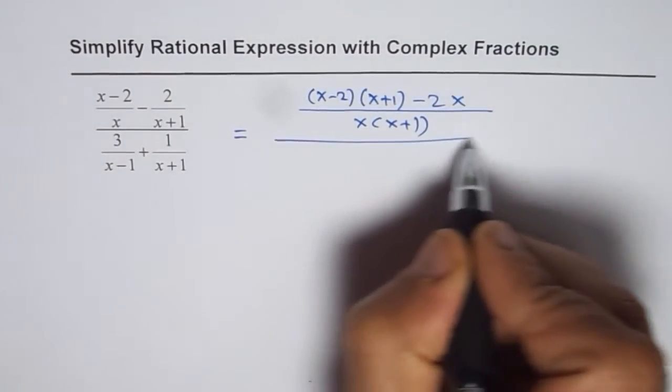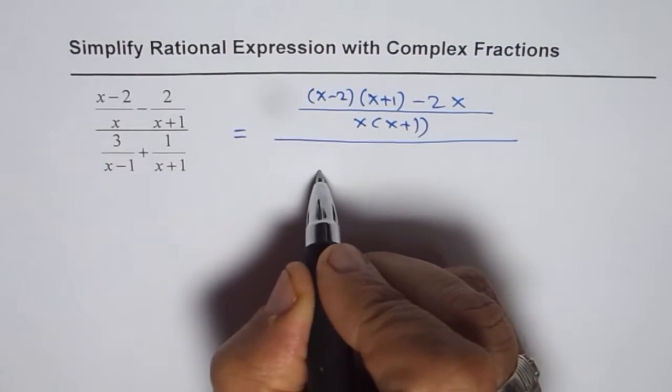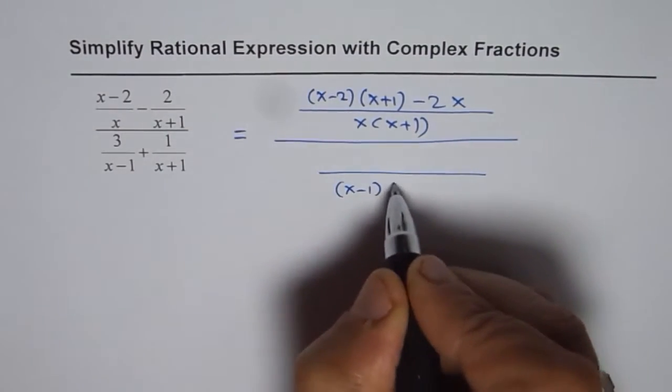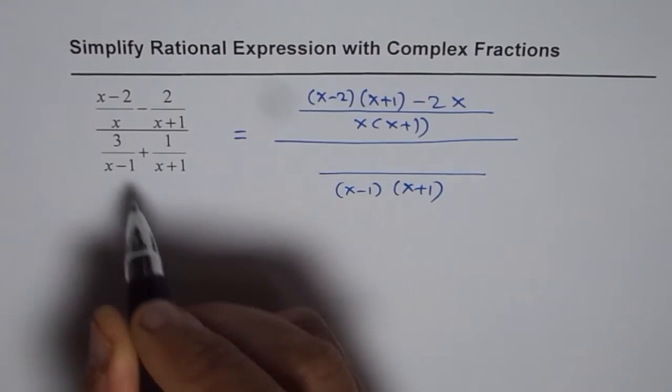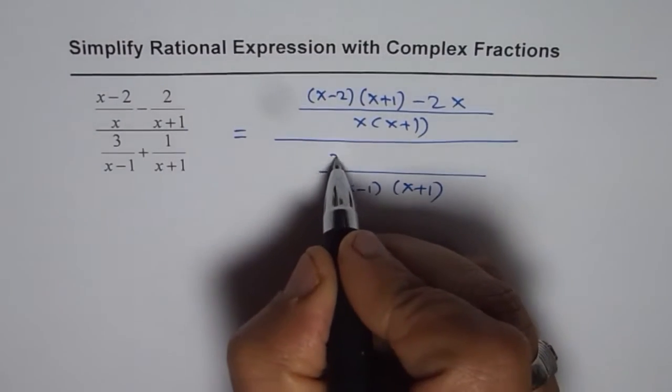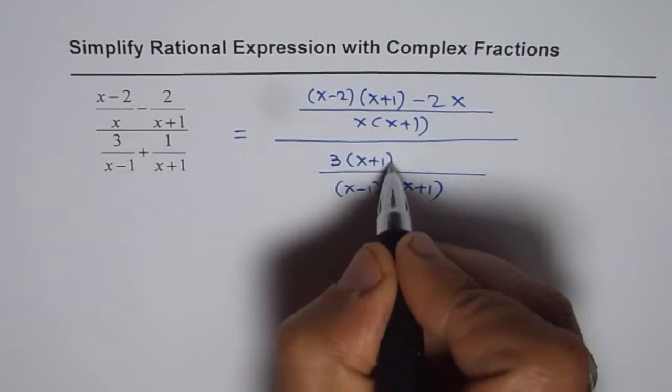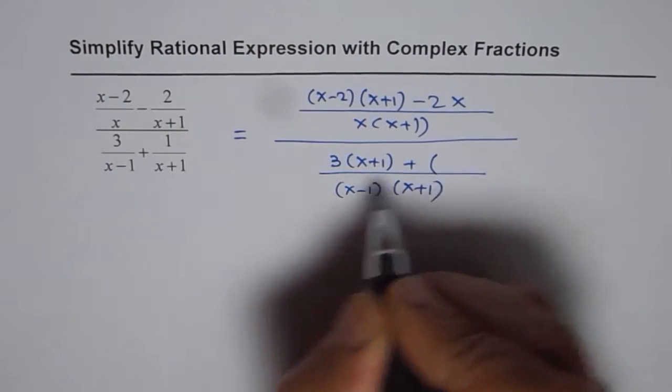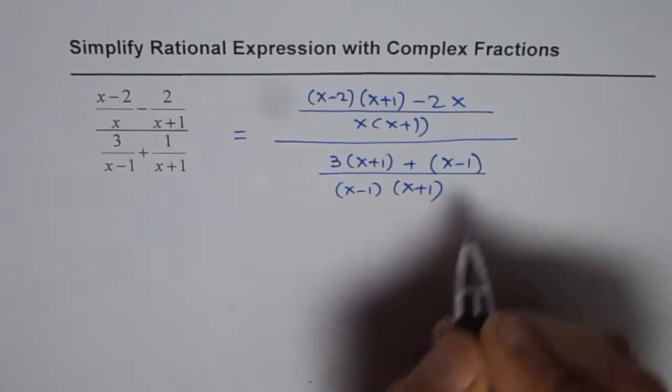In the denominator, the common denominator is x minus 1 times x plus 1. So 3 gets multiplied by x plus 1. That is cross multiplication, plus 1 gets multiplied by x minus 1.